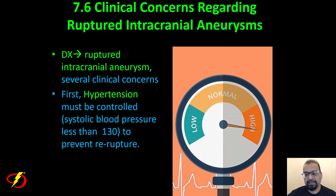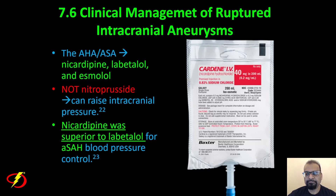When presented with a ruptured brain aneurysm, there are many clinical concerns. One of the first things to address is hypertension — it must be controlled to prevent re-rupture, with a target systolic blood pressure less than 130. The American Heart and Stroke Associations recommend nicardipine, labetalol, and esmolol, but specifically advise against nitroprusside because it can increase intracranial pressure. Nicardipine is the best agent for aneurysmal subarachnoid hemorrhage blood pressure control.